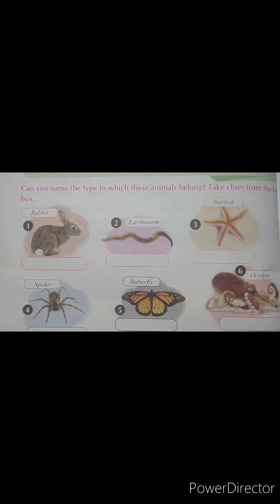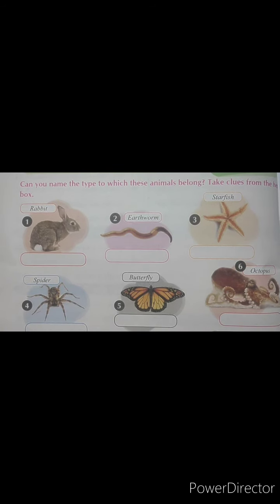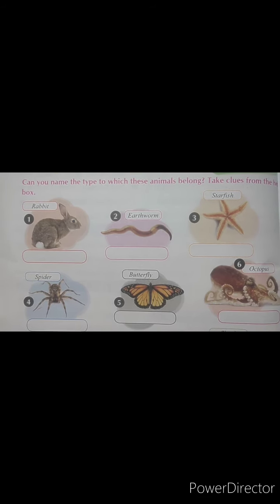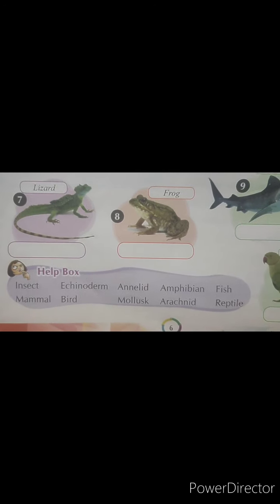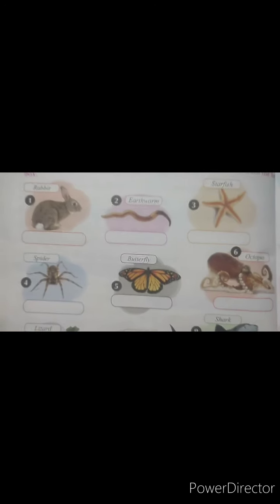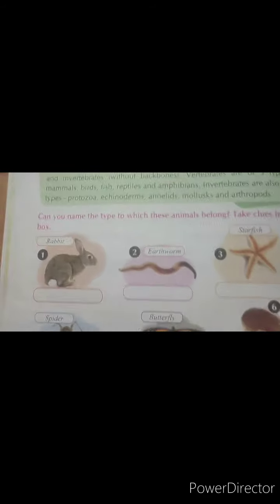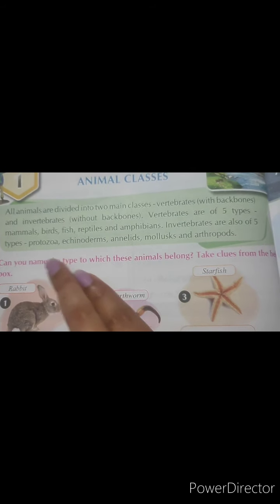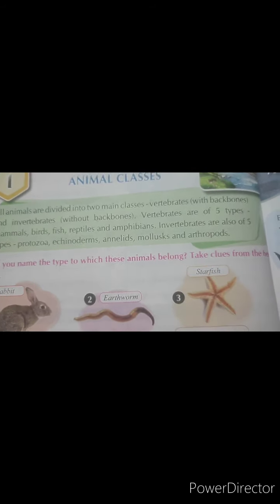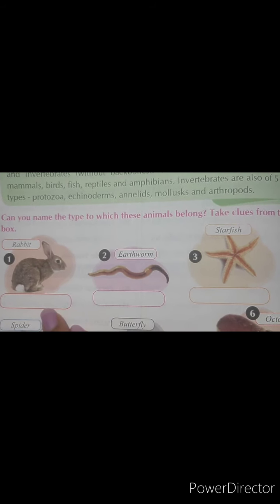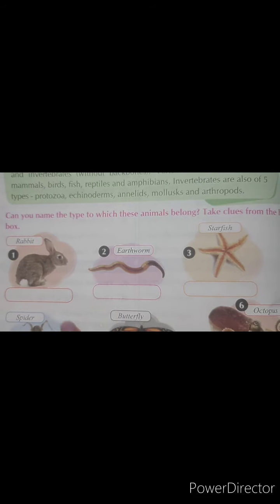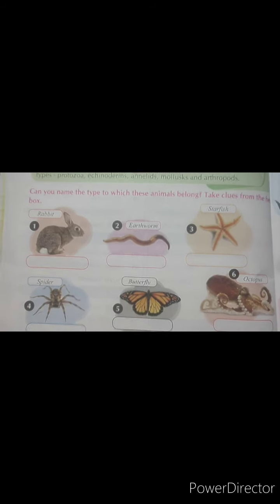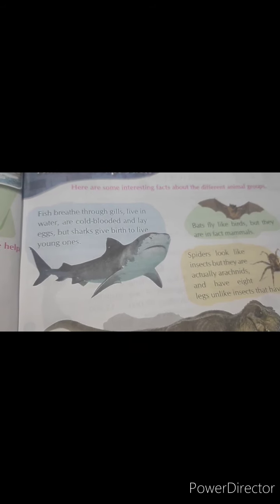Now my dear students, there is one question for you. Can you name the type to which these animals belong? Take clues from the help box. With the help box you have to fill up all these blanks. As I taught you, there are five types of vertebrate animals and five types of invertebrate animals. You have to tell to which type these animals belong. I hope you understand this chapter.